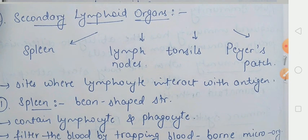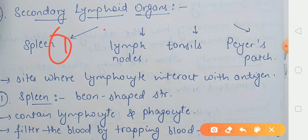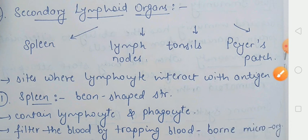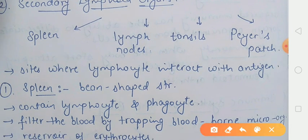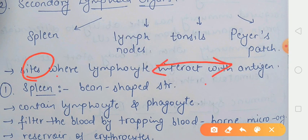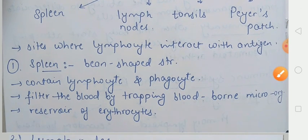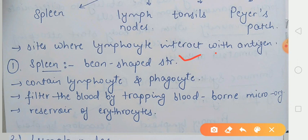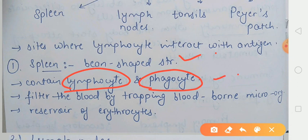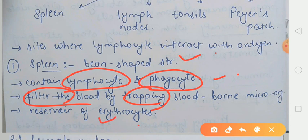Jo secondary lymphoid organs hain, voh chaar hain. Pehla hai spleen, doosra hai lymph node, teesra hai tonsils aur chautha hai Peyer's patch. Yeh jo secondary lymphoid organs hain, yeh aisi site produce karte hain jahan pe lymphocytes ka antigen ke saath interaction hota hai. Spleen kya hai? Ek bean-shaped structure hai. Iske paas lymphocytes aur phagocytes present hote hain. Spleen karta kya hai? Blood ko filter karta hai, aur uske andar jitne bhi jo blood-borne microorganisms hain unko pakad leta hai. Iske alaava jo spleen hai, voh erythrocytes ka bhi reservoir hai.